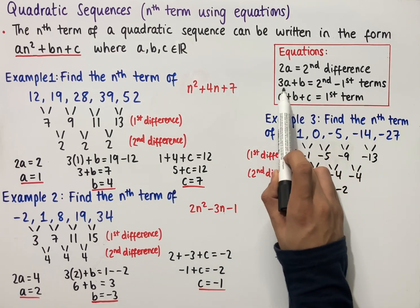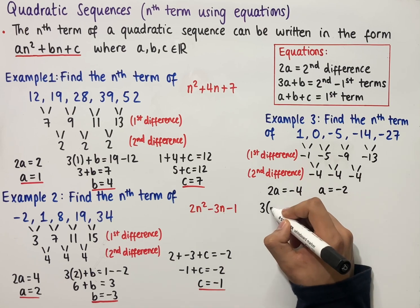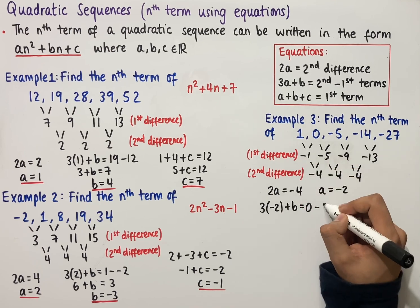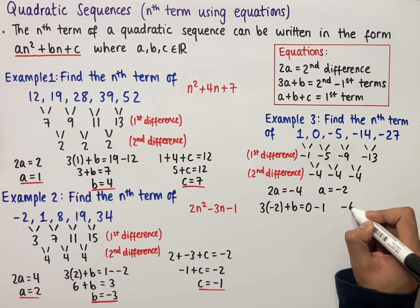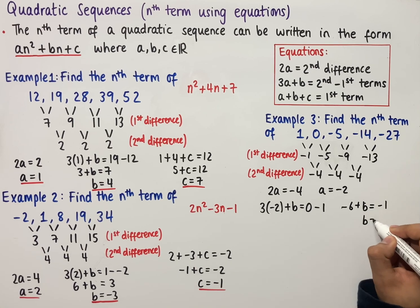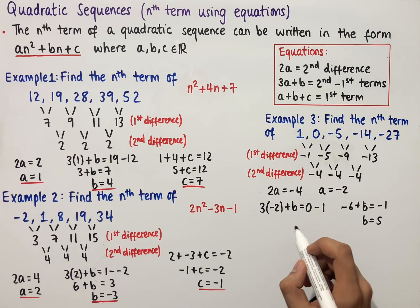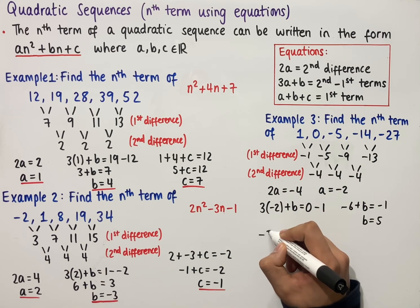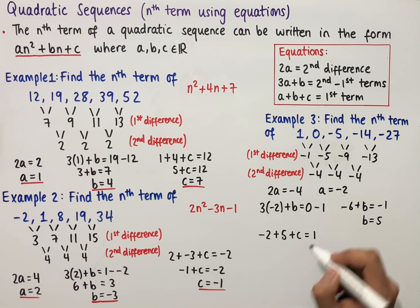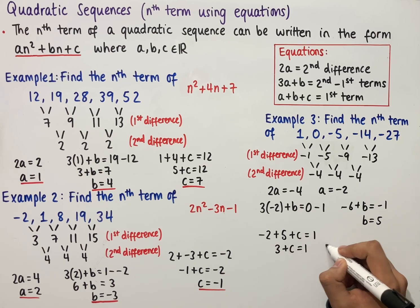Using the second equation, 3a plus b equals the second term minus the first term. So 3 times minus 2 plus b equals 0 minus 1. Simplifying, minus 6 plus b equals minus 1, and so b equals 5. Using the third equation, a plus b plus c equals the first term: minus 2 plus 5 plus c equals 1, which simplifies to 3 plus c equals 1, so c equals minus 2.